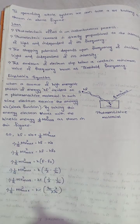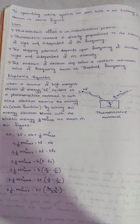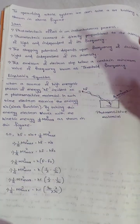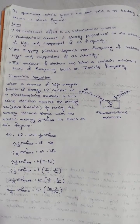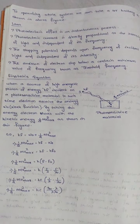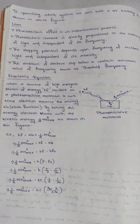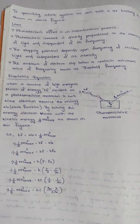Write the laws of photoelectric effect and Einstein equation for photoelectric effect. Photoelectric effect is the phenomenon of emission of electrons from the surface of a photosensitive metal due to the incidence of light of small wavelength.